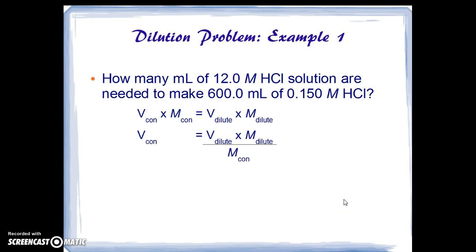If we plug in the numbers and units, we see that in this case it's 600 milliliters times 0.150 molar divided by 12.0 molar. We're not going to need very much of the concentrated solution to make this dilution. And when we do this, the calculator tells us the answer is 7.50 milliliters.